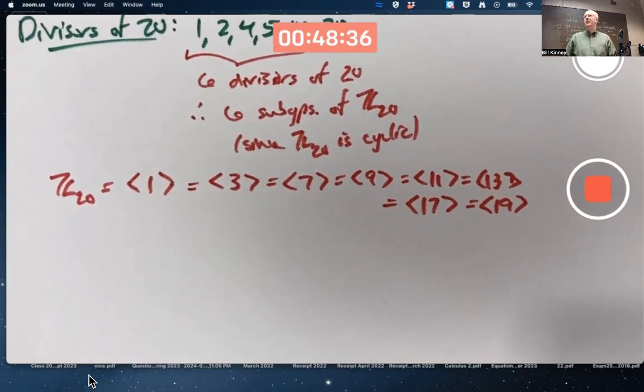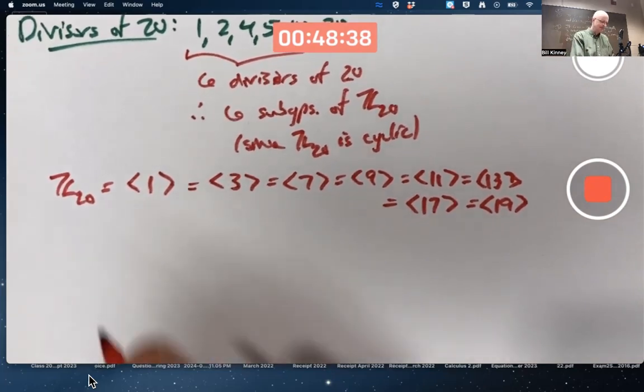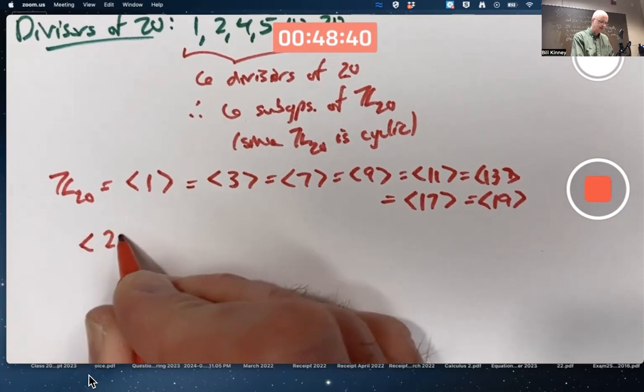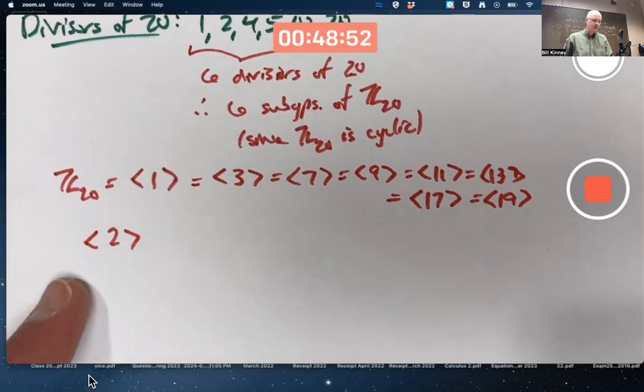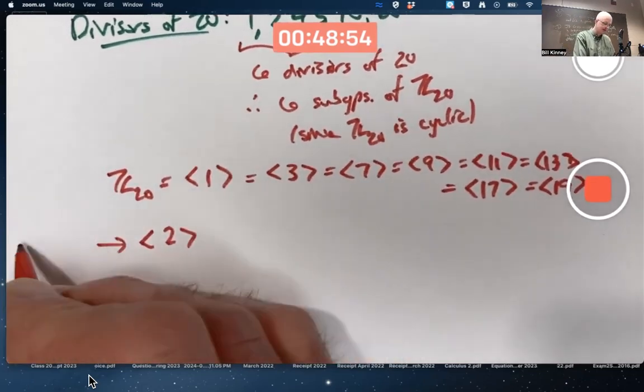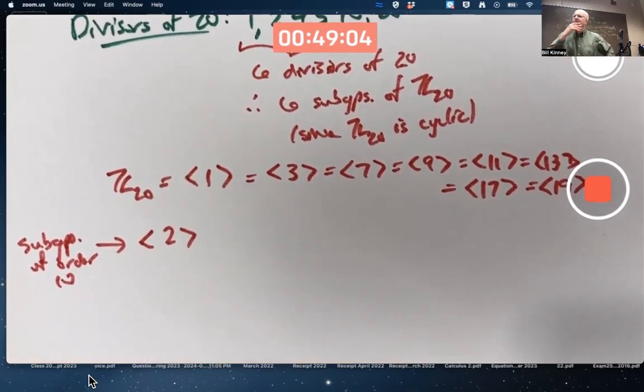That's the entire group. What would be a subgroup of order 10? How about the subgroup generated by 2? 2, 4, 6, 8, 10, 12, 14, 16, 18, 0. That's going to be a subgroup of order 10.